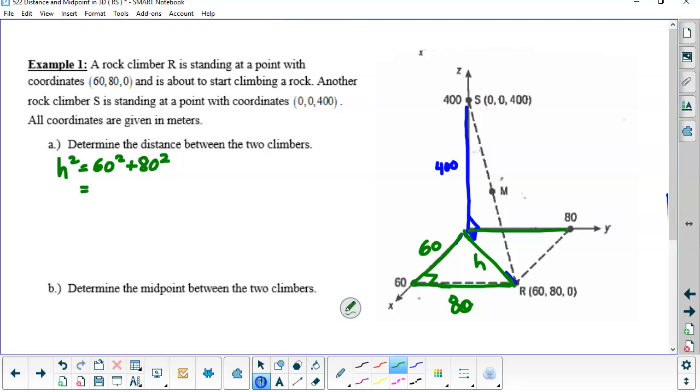Figure out what that is. With your calculator, not your cell phone. The hypotenuse is 100.